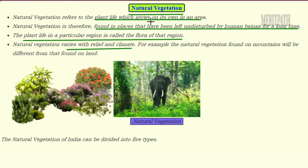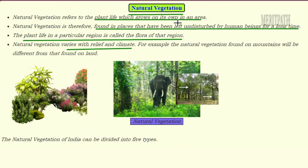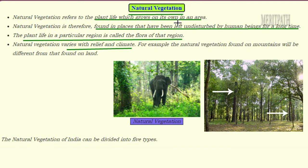Natural Vegetation refers to the plant life which grows on its own in an area. In our homes and gardens, we go and plant trees. But there are some places where plants grow on their own. Those places are known as natural vegetation — for example, forests. Nobody goes and plants trees in the forest; the plants grow by themselves. So that is referred to as natural vegetation.